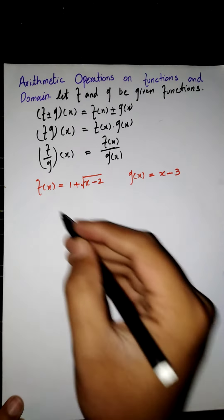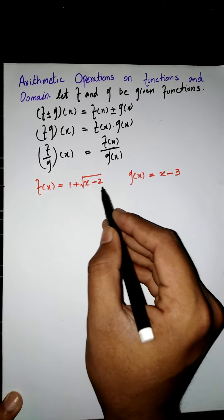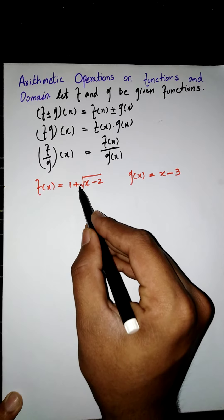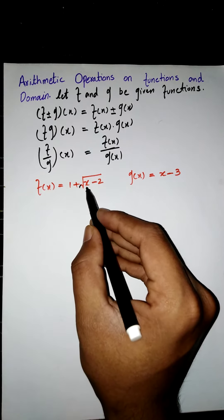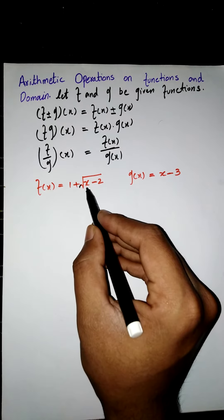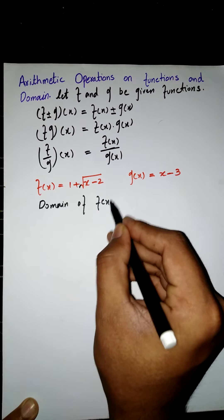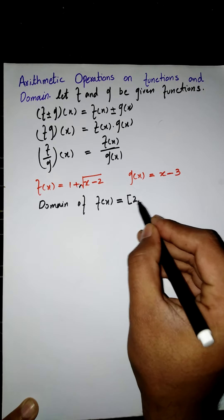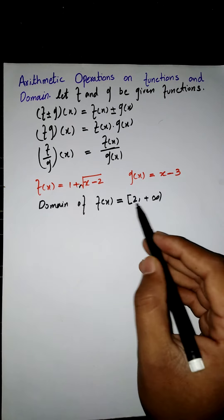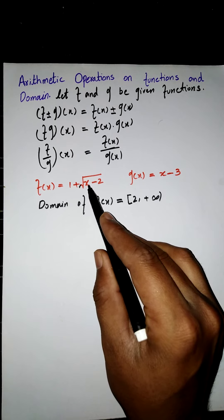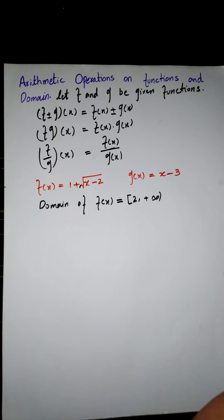To find the domain of f of x: when a radical term appears in our function, a condition is imposed — the term under the radical sign must be greater than or equal to zero. So x minus two must be greater than or equal to zero, which means x is greater than or equal to two. Therefore the domain of f of x is from two to positive infinity, written as [2, +∞).